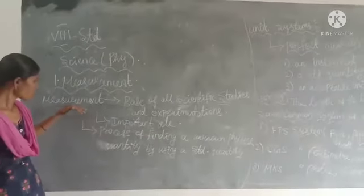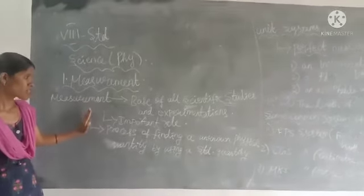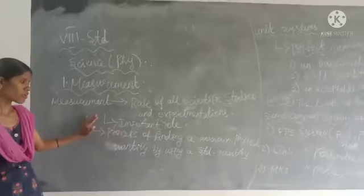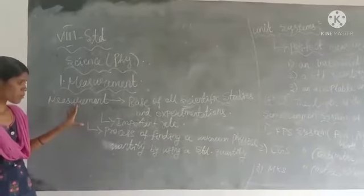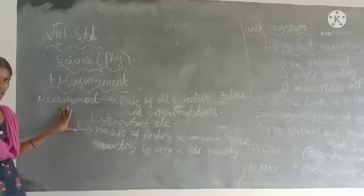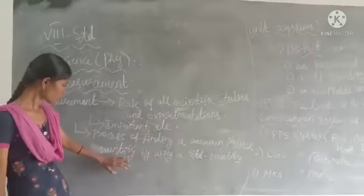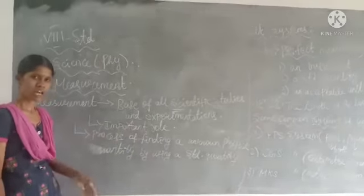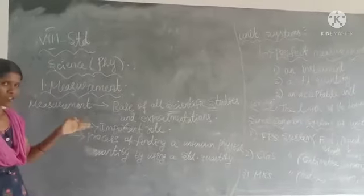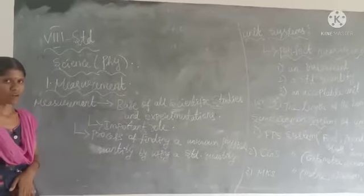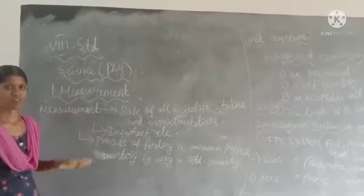Measurement plays an important role in our daily life. The definition of measurement is: it is the process of finding an unknown physical quantity by using a standard quantity. 'Unknown' means a quantity we don't yet know. Standard quantities include things like length, mass, and so on. That is why this process is called measurement, and it is important to all scientific studies and experimentations.